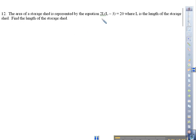What should be our first step here? Distributive property. Yeah, we get 2L squared minus 6L equals 20.